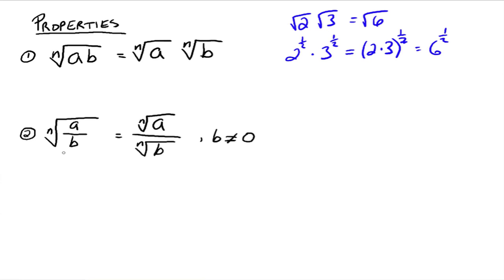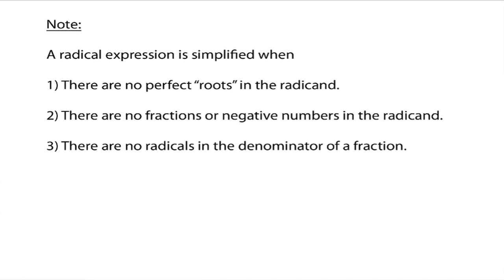Property 2 says the root of a quotient is the same thing as the quotient of the two roots, and the denominator can't be 0. We're going to use these properties to simplify radicals. A radical expression is simplified when: one, there are no perfect roots in the radicand — no perfect squares under a square root, no perfect cubes under a cube root, and so on; two, no fractions or negative numbers in the radicand; and three, no radicals in the denominator of a fraction.